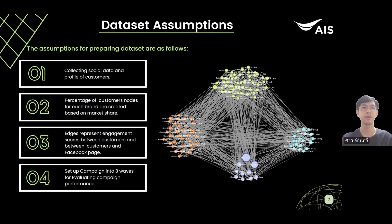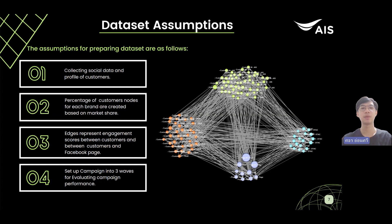Dataset assumptions: First, we conduct a targeted campaign to collect social data to design a social network graph. This data includes demographics, information on network usage, and Facebook accounts. Second, customer nodes in the graph are allocated based on market share. Third, edges in the graph show engagement scores between customers and between customers and Facebook profile pages. Engagement is measured through likes, comments, and shares. Lastly, the marketing campaign is divided into three waves. Each wave helps us evaluate campaign performance and make data-driven decisions.